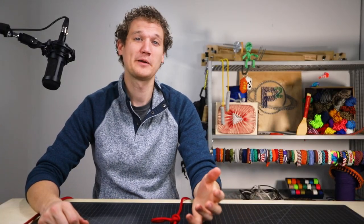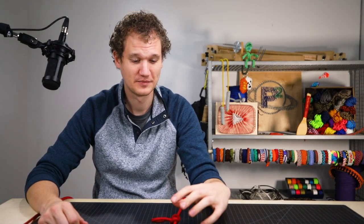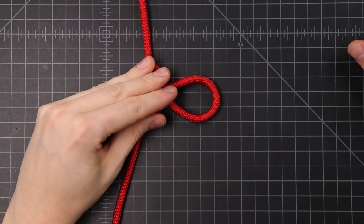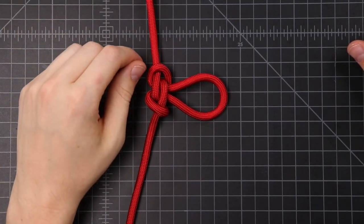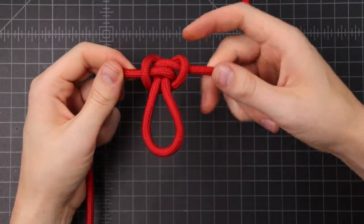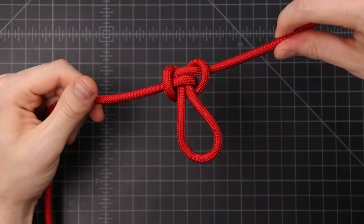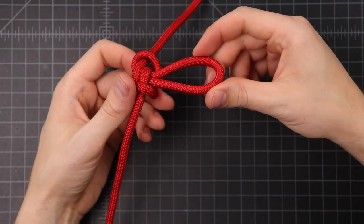And our last stopper knot is the alpine butterfly loop. You've probably heard of this knot. It's not really a stopper knot. It's actually a midline loop. And you can tie it in the bite, which is why this one is so useful. So if you need to make a stopper when you don't have access to either of your ends, this is an ideal choice. You just want to make sure that you leave a big enough loop that it's not going to slip through.